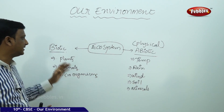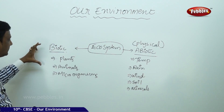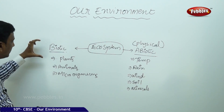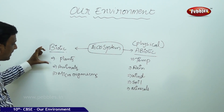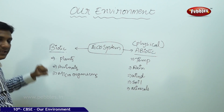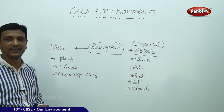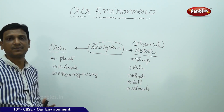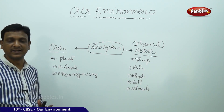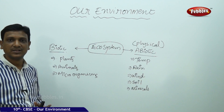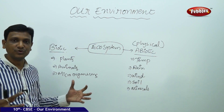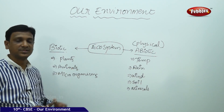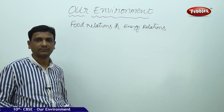Now let us see what these biotic components are — how plants and animals are categorized in an ecosystem, how energy relations are built up, and how food relations are established within an ecosystem.